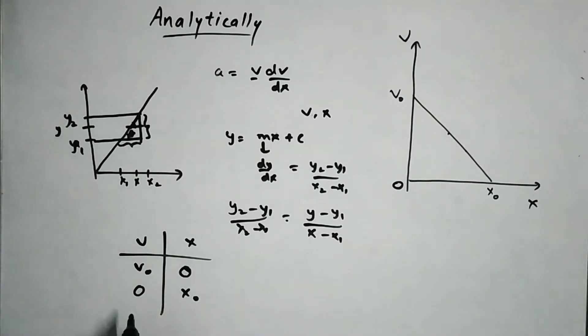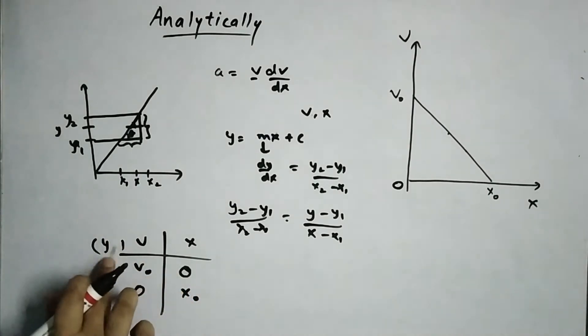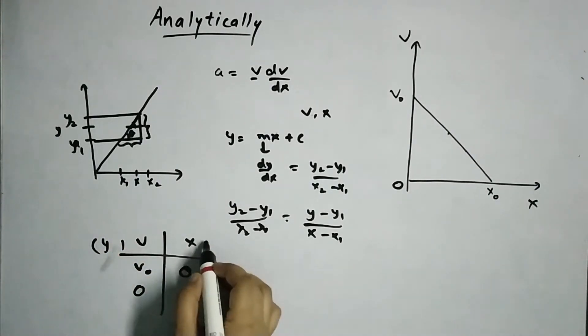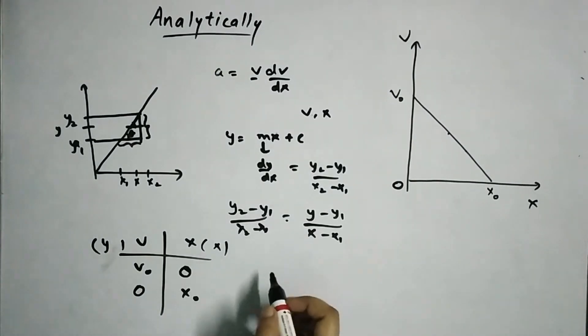v is 0. So this will be my y1. So this will be my y1, this will be my y and this will be my x, all right? I'll put that in this equation.